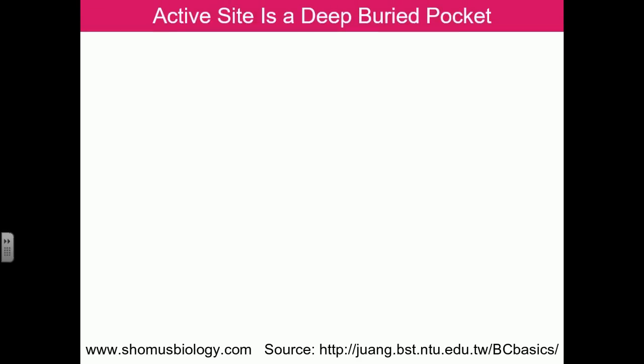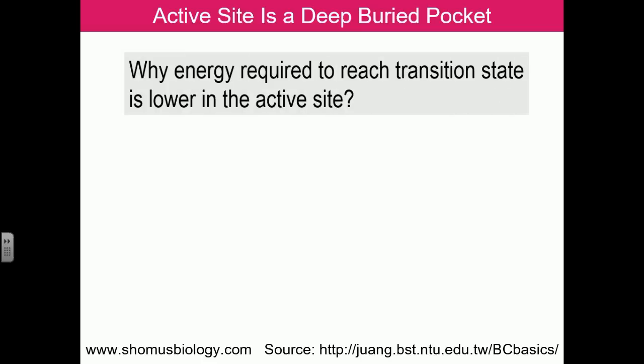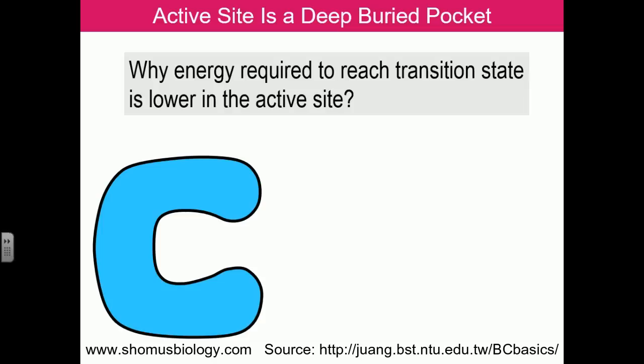The question is why the energy required to reach the transition state is lower in the active site and not lower elsewhere. Think of the enzyme's active site like a magic pocket — once you put reactants in, they can turn into product. We already know this pocket decreases the activation energy of the reaction intermediates, but the question is how. There are a few possible mechanisms that can help explain how enzymes bring about this change in activation energy and what the actual requirement of an enzyme in a chemical reaction is. Let's assume this enzyme has an active site cleft — the magic pocket.